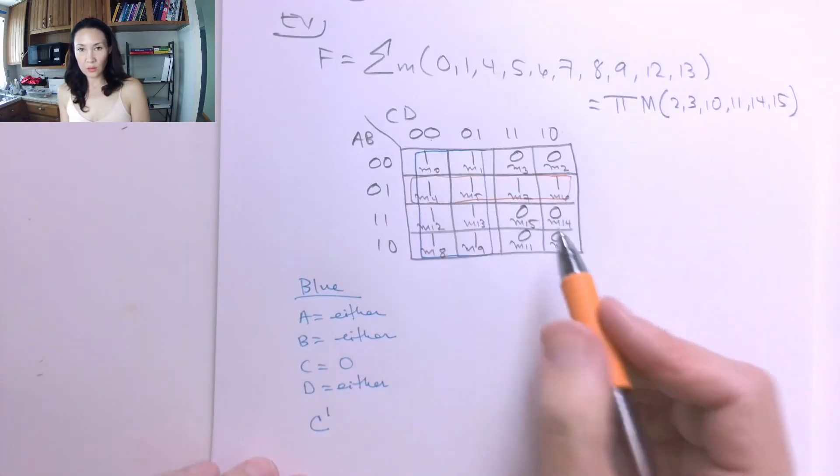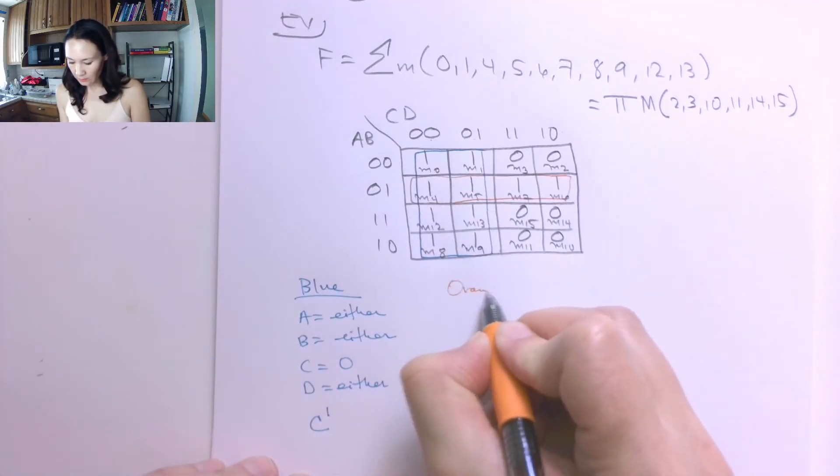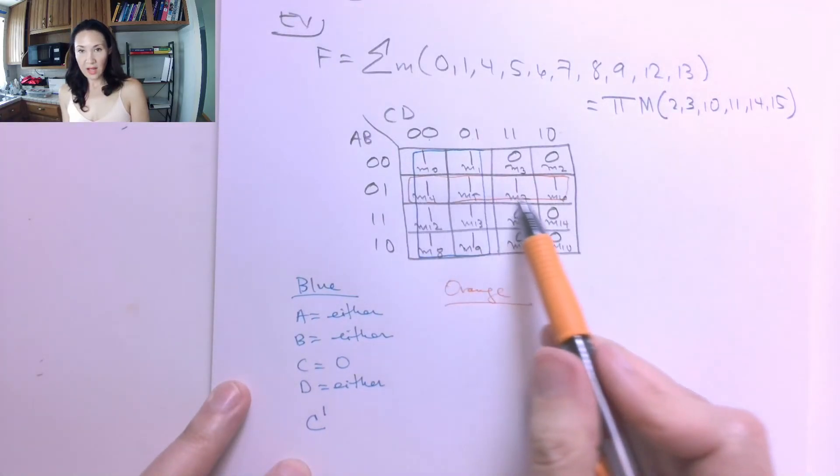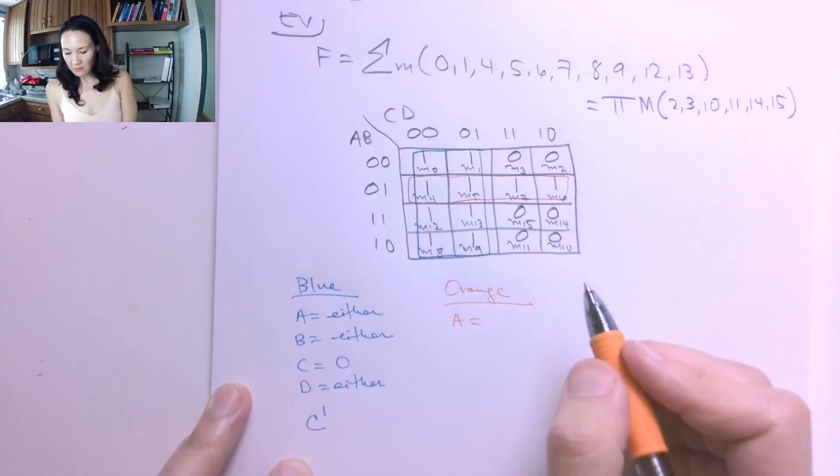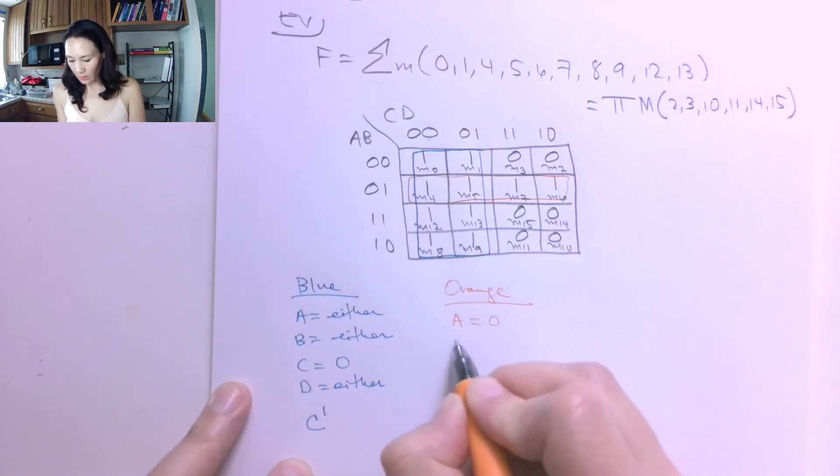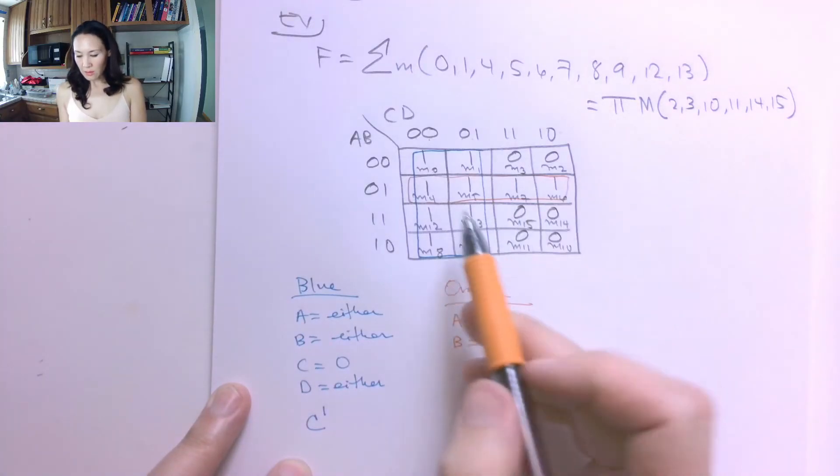And then the other group that we have is the orange group. In this orange group, we have the entire row here, and the values for A and B for this row is A is 0 and B is 1.